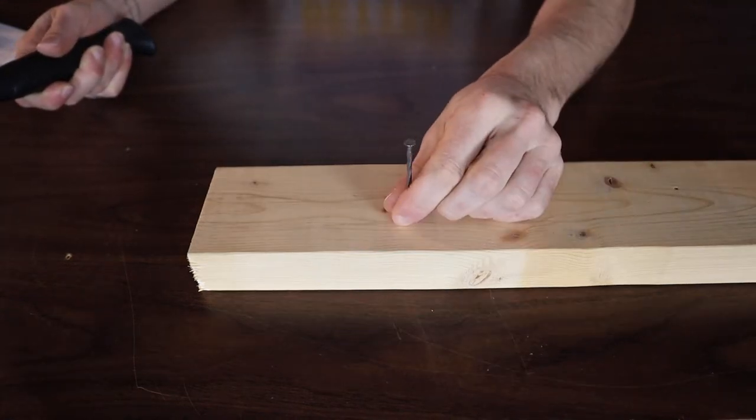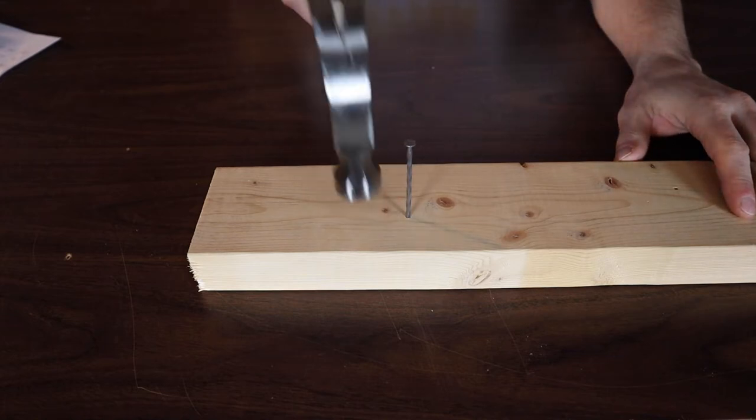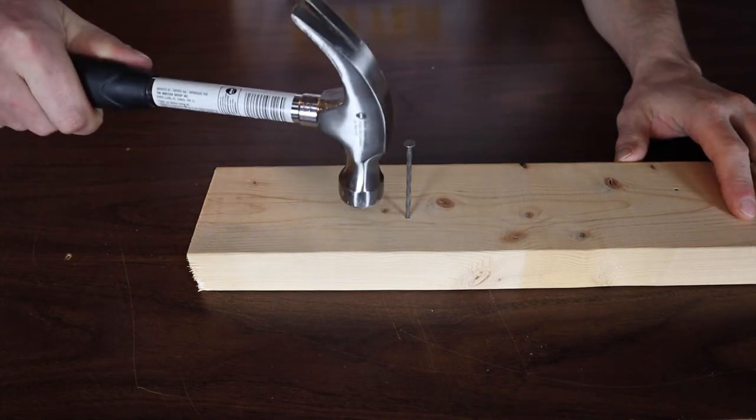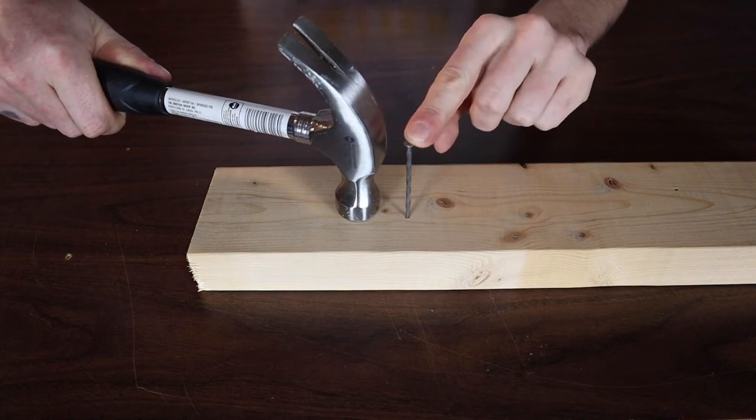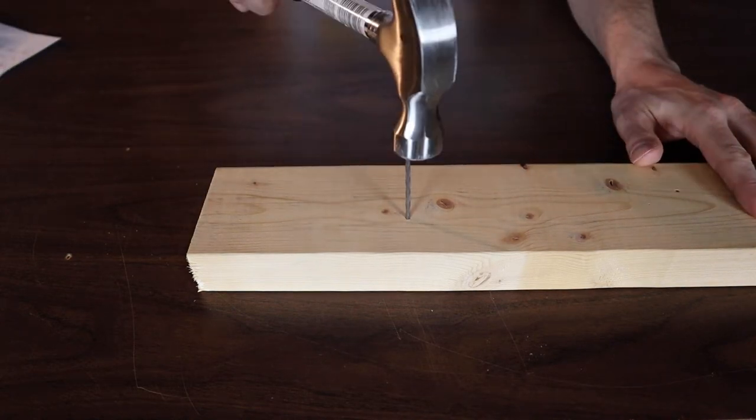Once you've got your nail started and you're ready to drive it in, swing the hammer so it comes down parallel with the nail. You want to be looking at the head of the nail, and like I said before, swing with your elbow and drive it in.